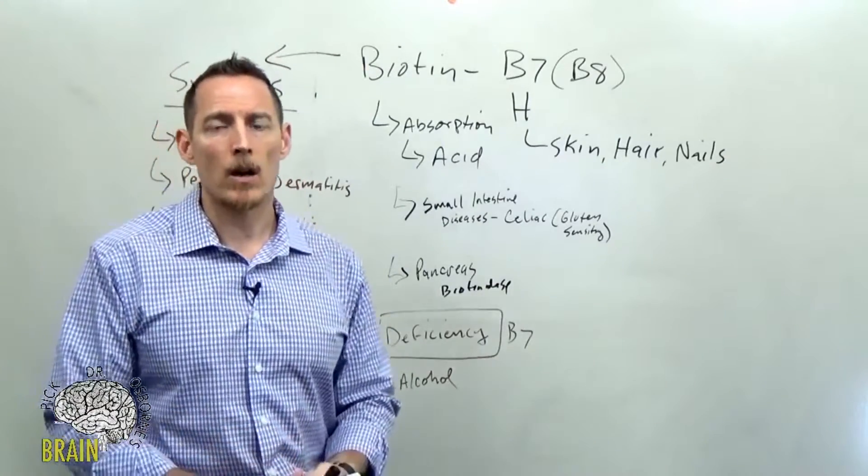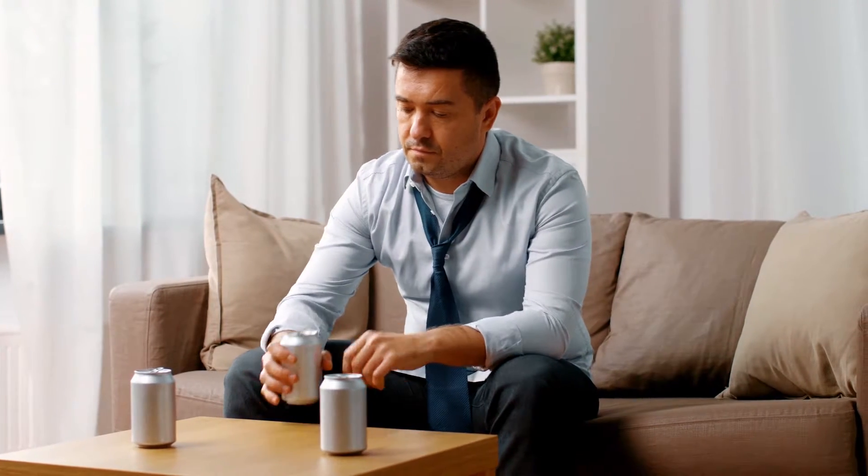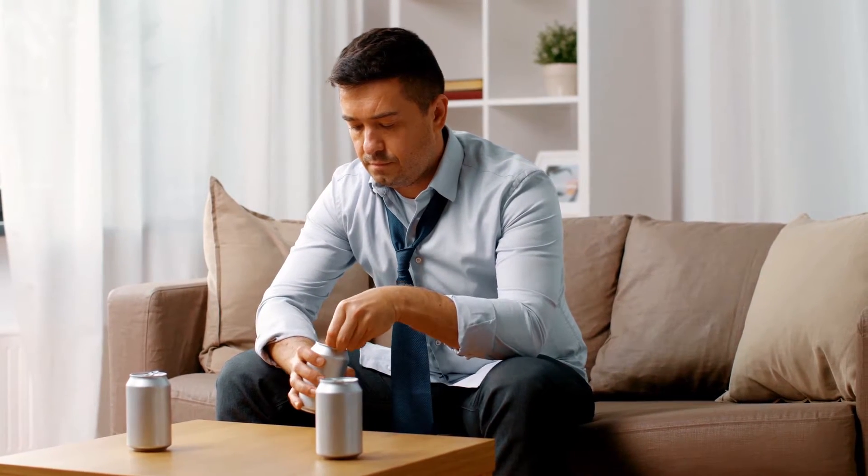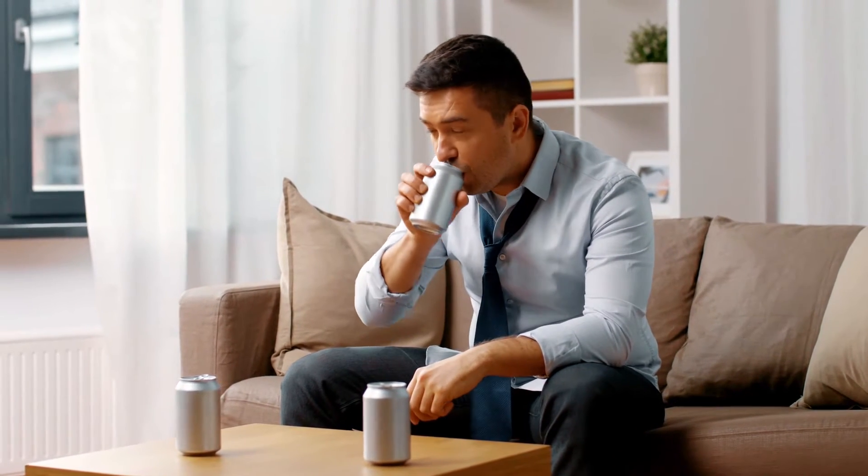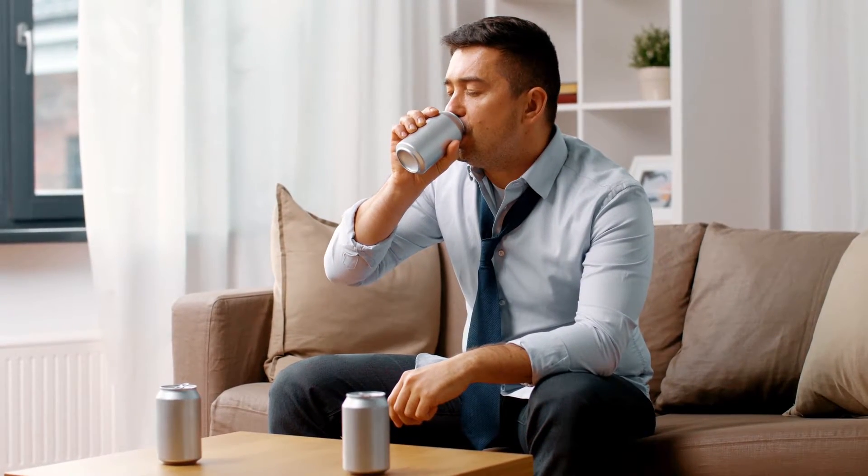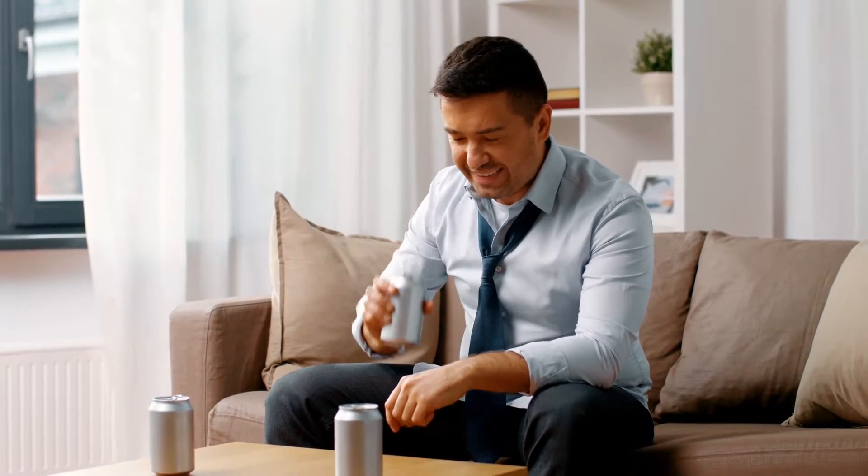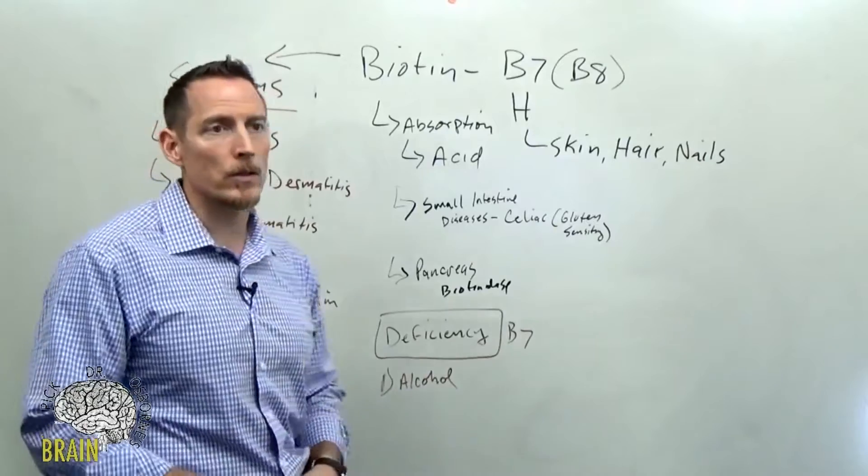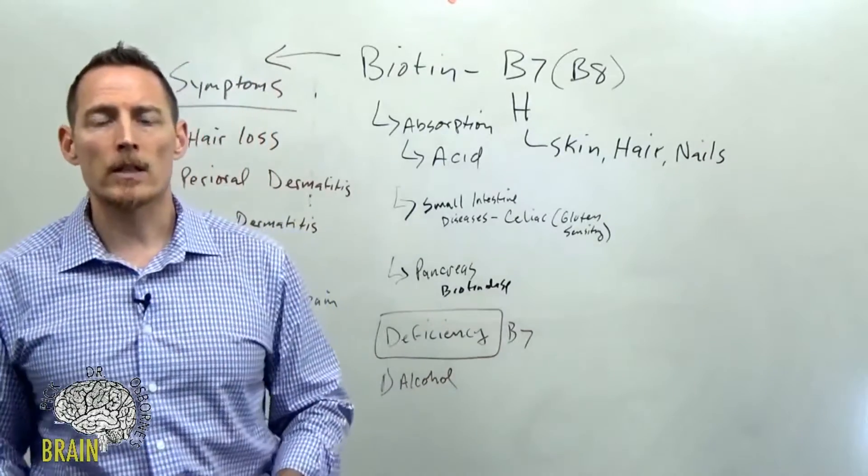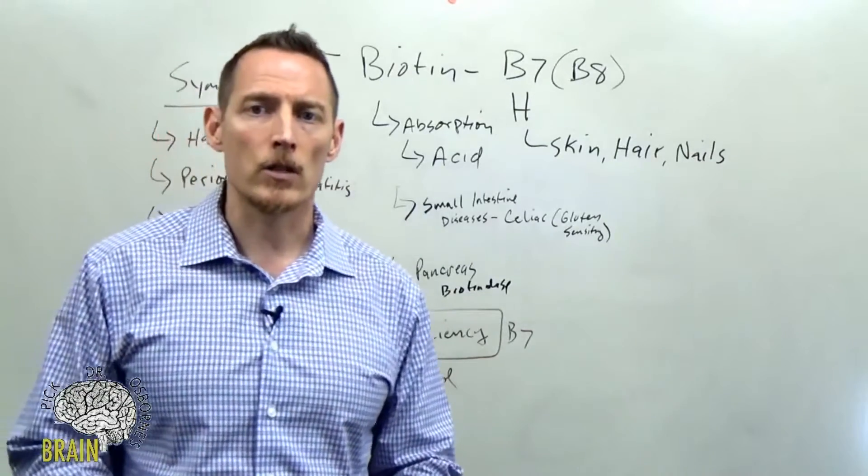How do we define an alcoholic? Because some people are functional alcoholics. I mean, I run into people that are drinking every night and they still get up, go to work. They're able to take care of their responsibilities. I would call that functional alcoholism, meaning they're not drunks. But you got to be real careful because the long-term exposure to alcohol consistently over time is definitely going to contribute to a biotin deficiency.